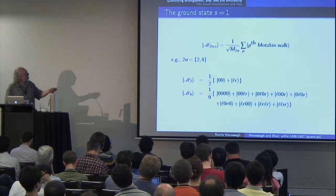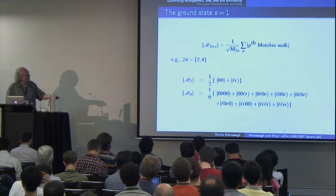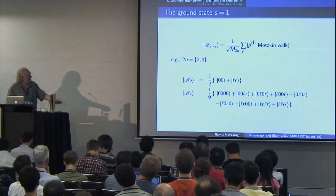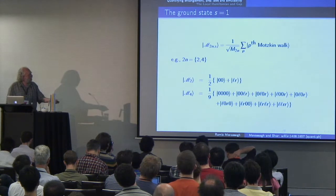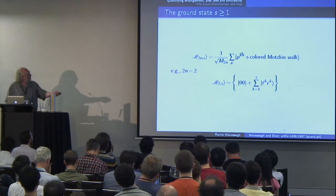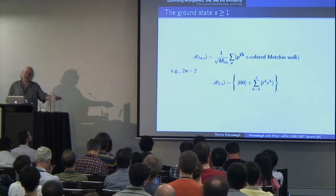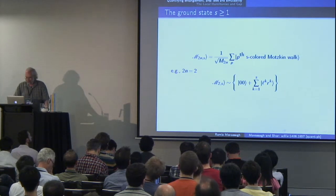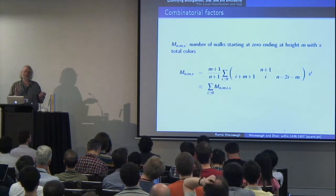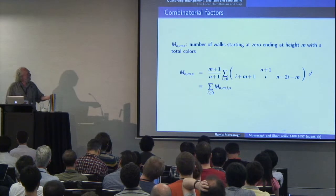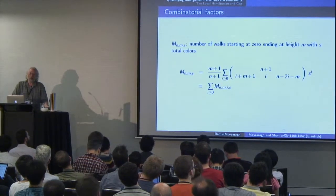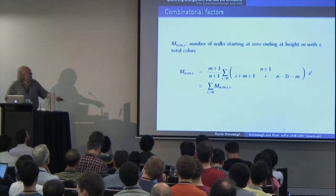Here's an example of the ground state for s=1. For a Motzkin walk of length 2 it's (1/2)(|00⟩ + |LR⟩). For a Motzkin walk of length 4, it's all sequences of left and rights with an even number of lefts and rights where the parentheses match. For colored Motzkin walks, for every left and right there are K possibilities for colors. We know exactly the number of Motzkin walks that start at 0, end at height m, and have s total colors from combinatorics.